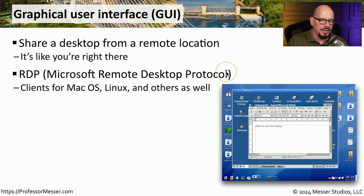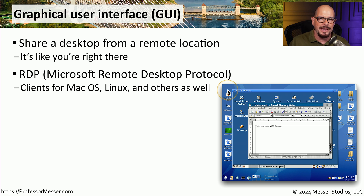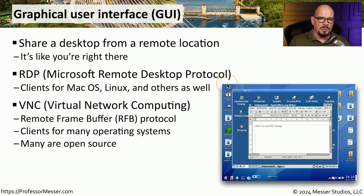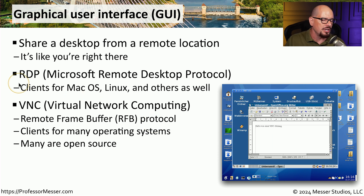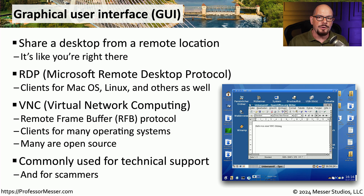RDP, or Microsoft Remote Desktop Protocol, allows you to remotely control a Windows machine either from another Windows machine across the network, or by using remote desktop protocol clients available for nearly any other operating system. Another option for remote control would be VNC, or Virtual Network Computing, which uses a protocol known as RFB, or Remote Frame Buffer. VNC is very similar in function to RDP but can be run on many different operating systems. If you're on a help desk or support team, you'll likely use RDP or VNC.